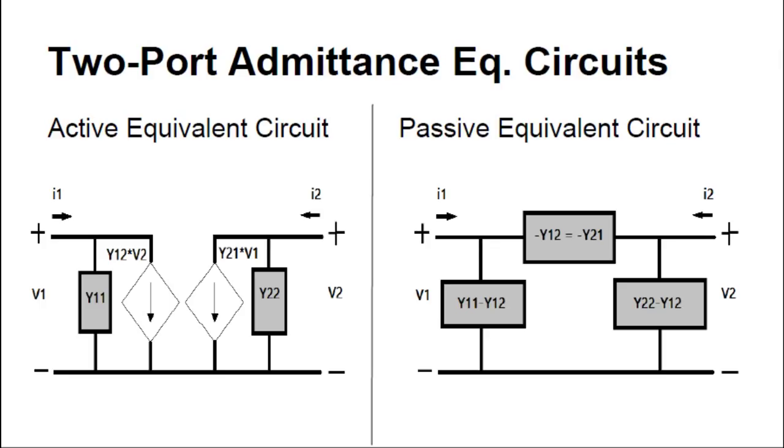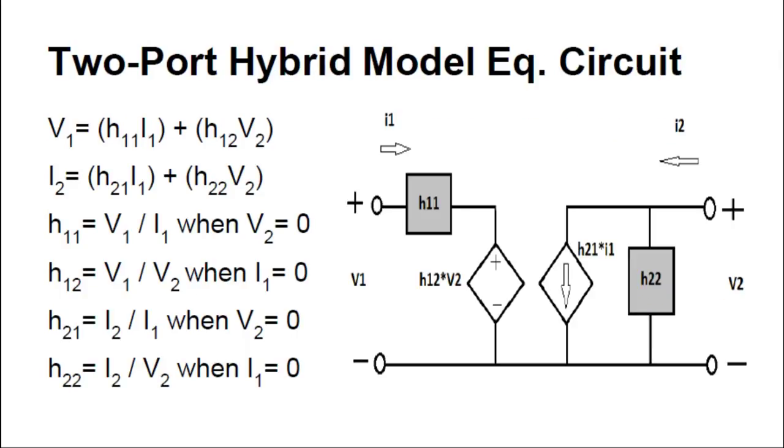The last of the common equivalent two-port circuit models is the hybrid model. Here the input voltage and output current are functions of the input current and the output voltage. You can see the important equations for the hybrid model. The H parameters, as they're known, H for hybrid, are admittances, impedances, and pure ratios. You've got a mix of the admittances and the impedances, hence the term hybrid.